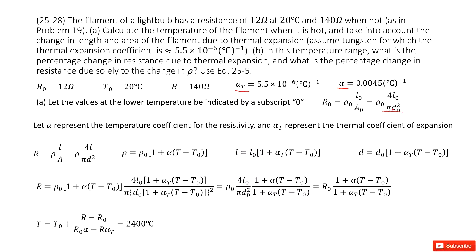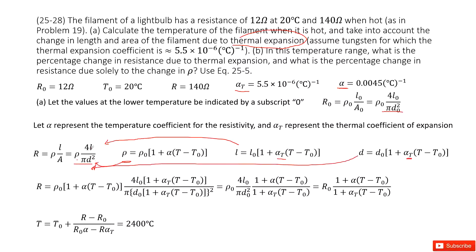Now we look at the final resistance: R equals rho times L over A, and A can be written as pi D squared over 4. The resistivity rho changes with temperature, the length L changes with temperature using the thermal expansion coefficient alpha T, and the diameter D also changes with temperature using alpha T. All of them change with temperature.